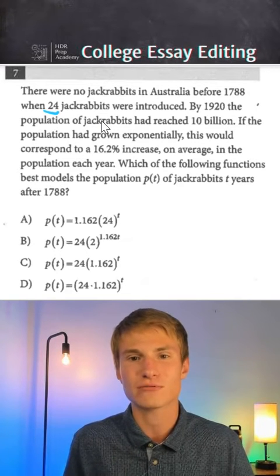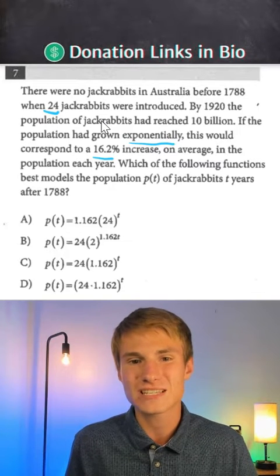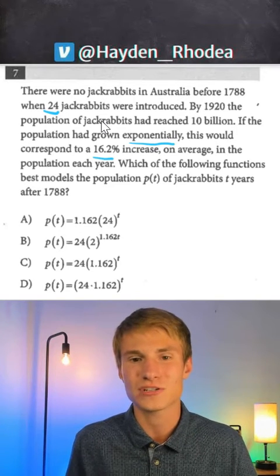By 1920, the population of jackrabbits had reached 10 billion. If the population had grown exponentially, this would correspond to a 16.2% increase on average in the population each year.